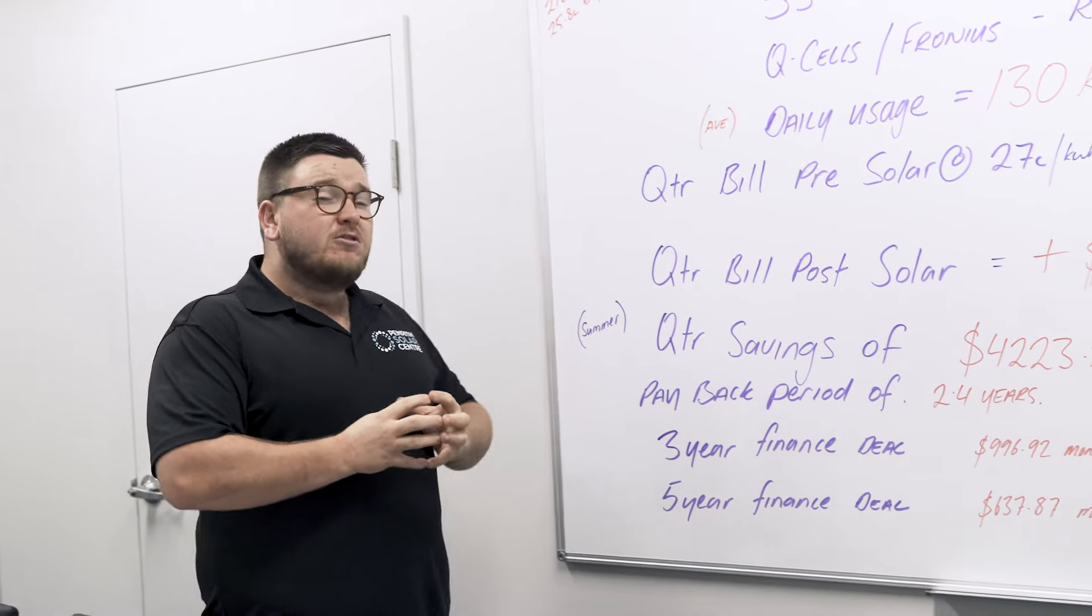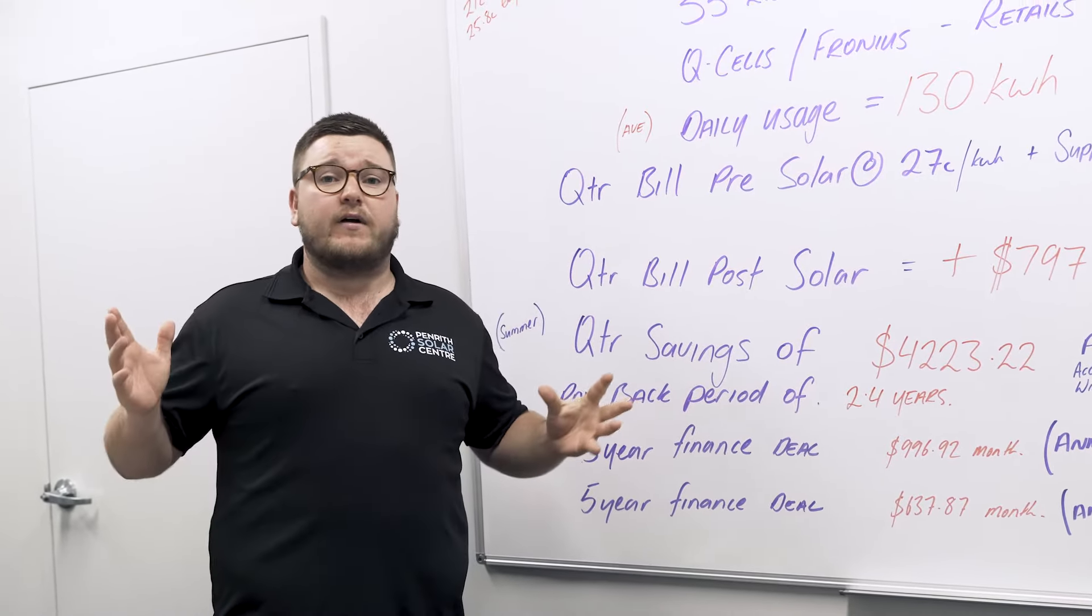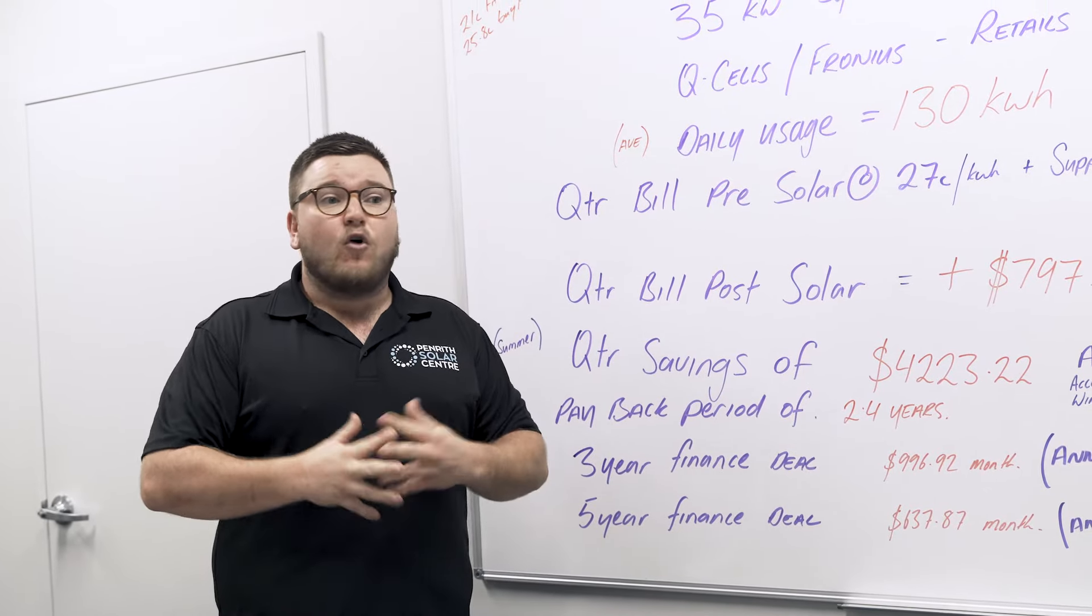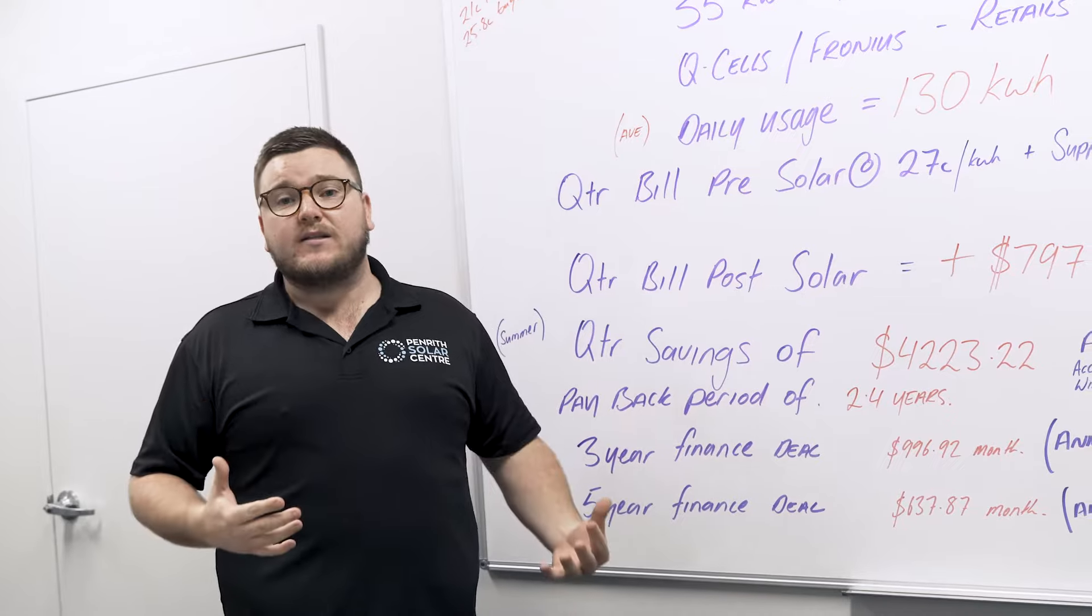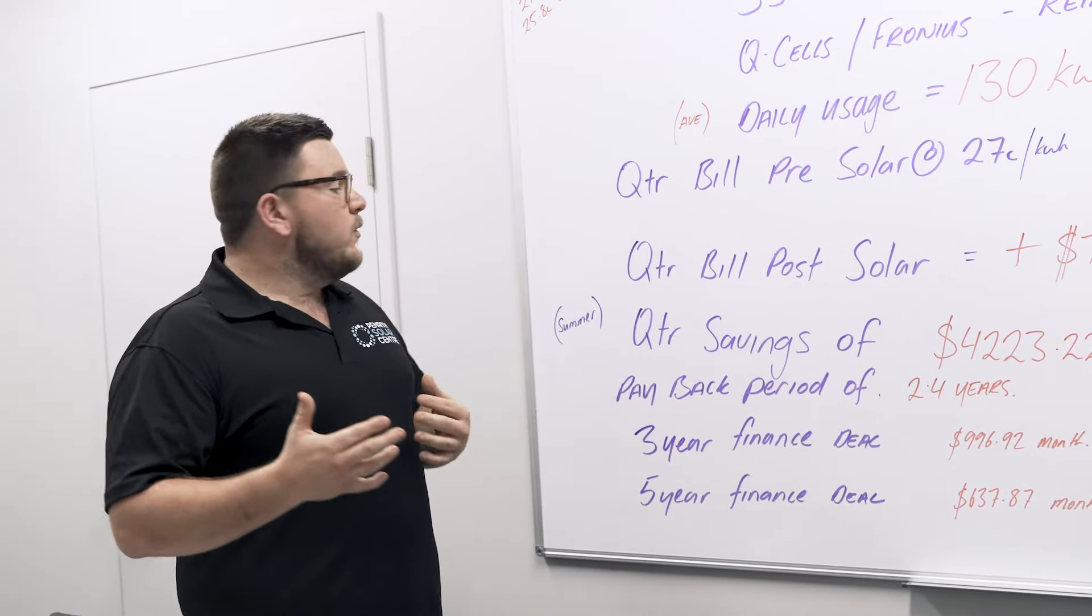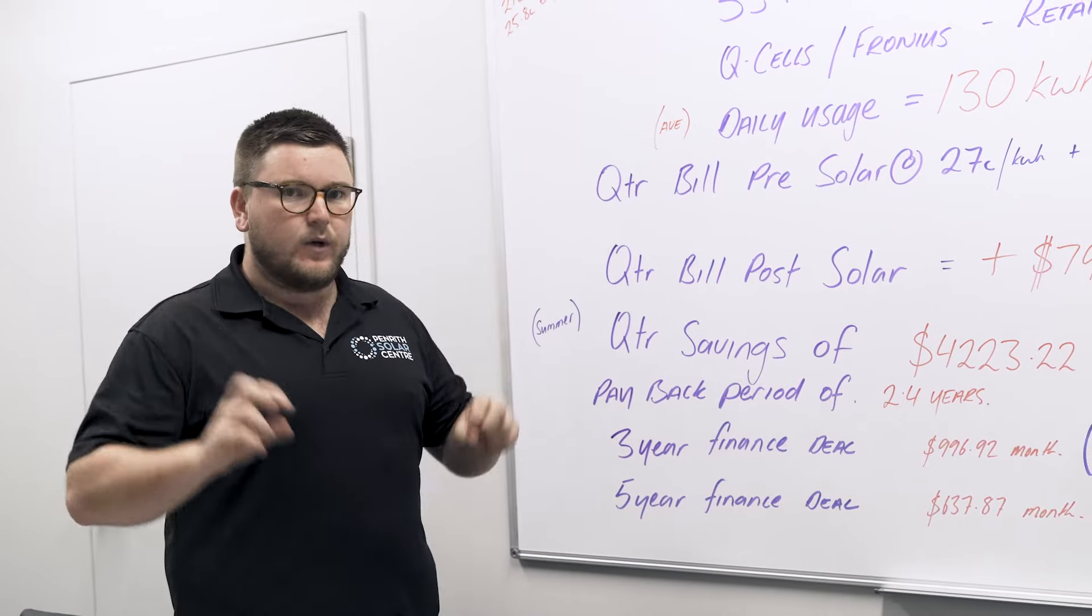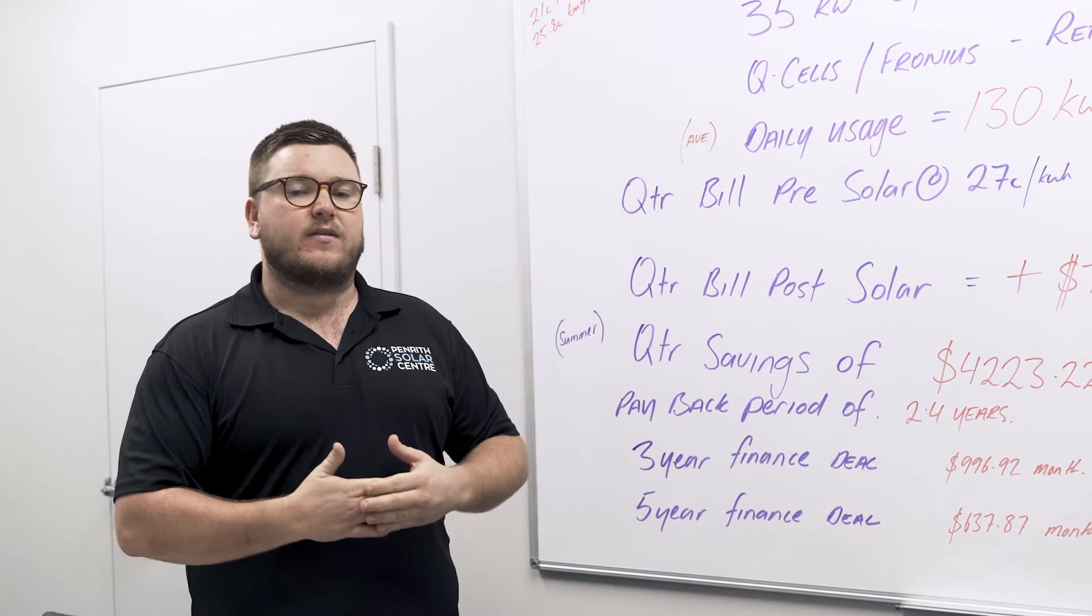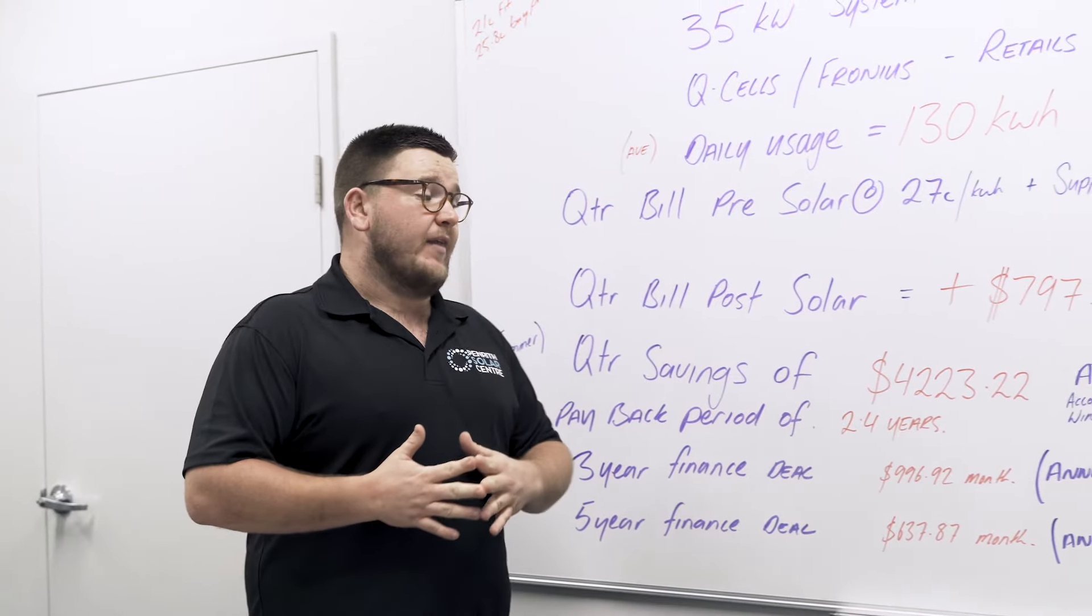But our generation actually wasn't that fantastic. We did see systems, thanks to Solar Analytics giving us the stats, performing around 25 to 30 percent lower than what we would have expected. So we would be quite confident to say that in a standard summer, or a summer without our bushfires and without the conditions that we've seen, we would expect our savings to actually be a little higher than that. But nevertheless we're happy with that.